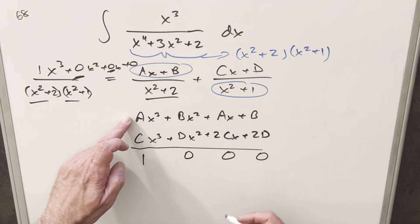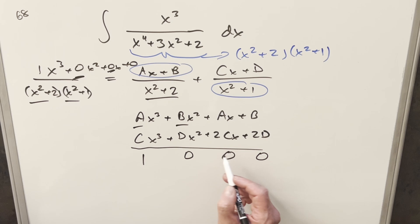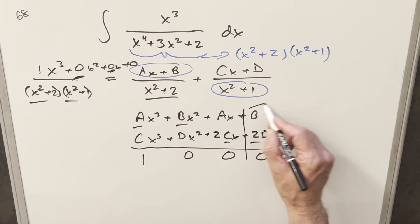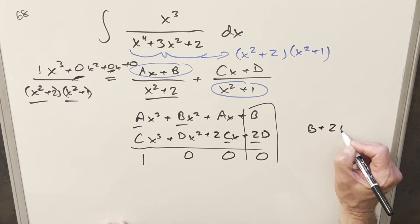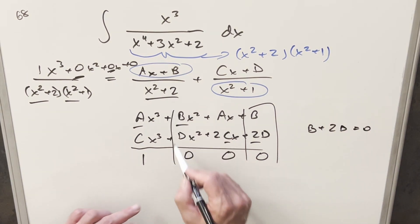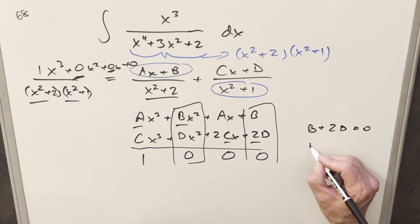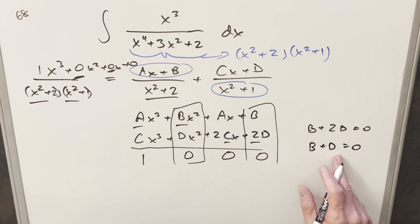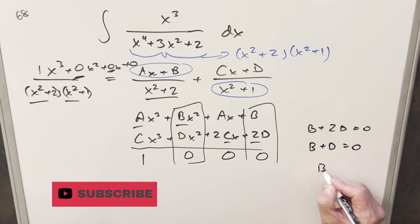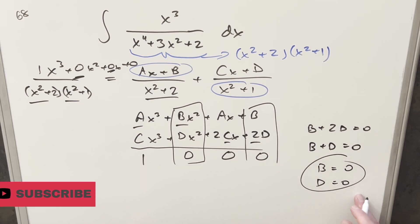So we just need to find these four constant values, a, b, c, and d. So like first, we have this equation here. We're saying b plus 2d equals 0. And then we can use this one right here. We're saying b plus d equals 0. But the only way for these two equations to be true, we need b equal to 0 and d equal to 0. So that takes care of those two values.